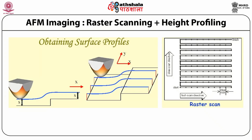AFM imaging uses raster scanning and height profiling to obtain surface profiles, as shown in the figure. The probe carries out measurements in the x, y, and z directions, obtaining surface profiles in all three dimensions. The lower part of the slide shows the raster scan pattern used in AFM.